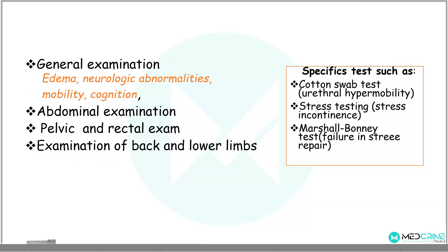After conducting a good history, you need to do a general examination for any edema, neurologic abnormalities, mobility problems, and cognition. You need to do an abdominal examination, pelvic and rectal examination — which are important here — and examination of the back and lower limbs. Specific tests in a patient with urinary incontinence include a urethral hypermobility test using a cotton swab test, stress testing to confirm stress incontinence, and the Marshall-Bonney test.